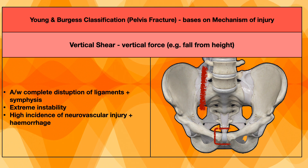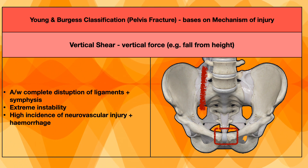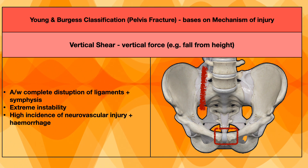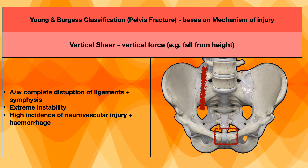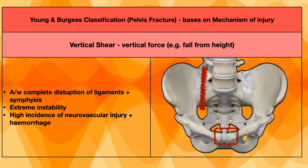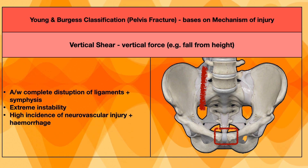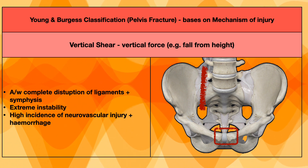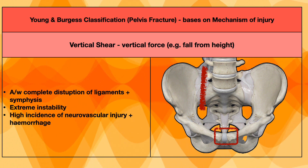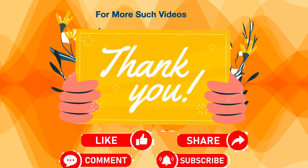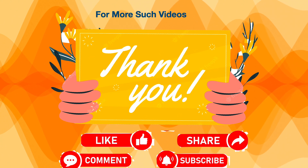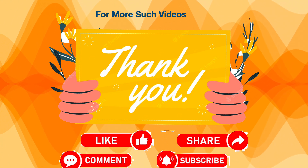This was about Young and Burgess classification. It has three types: lateral compression, anteroposterior compression, and vertical shear. Thank you very much.